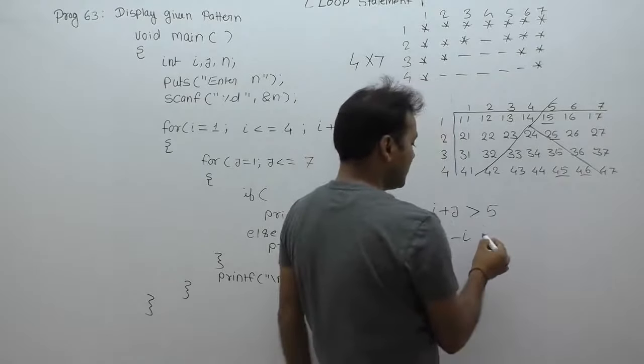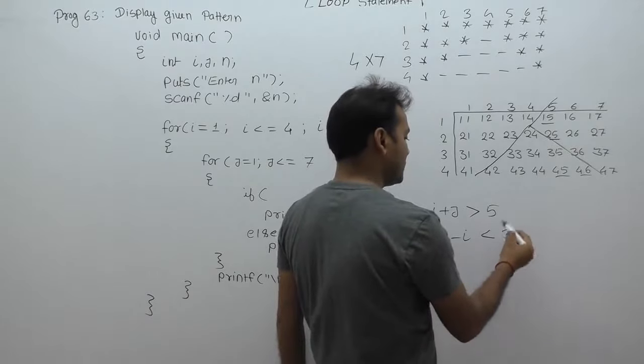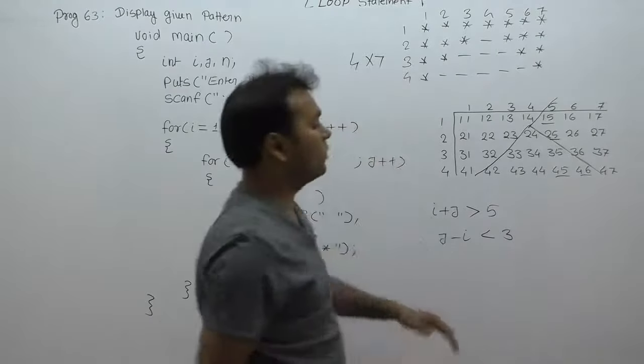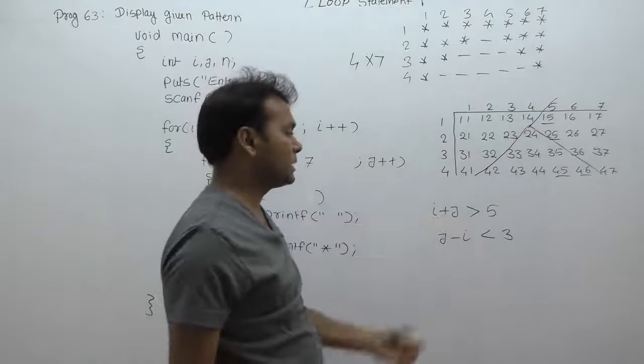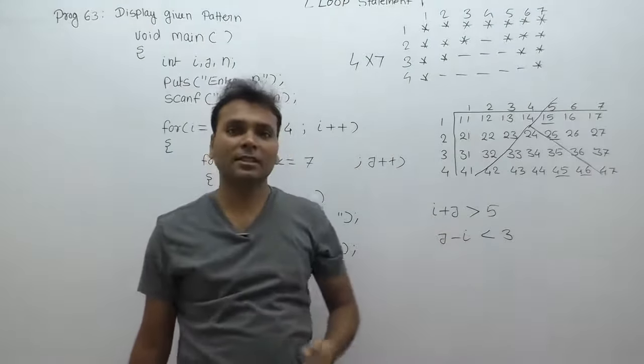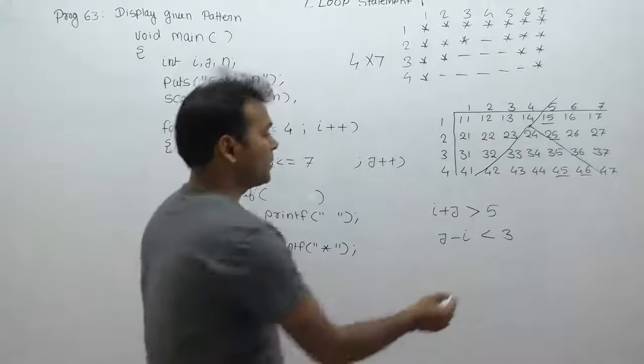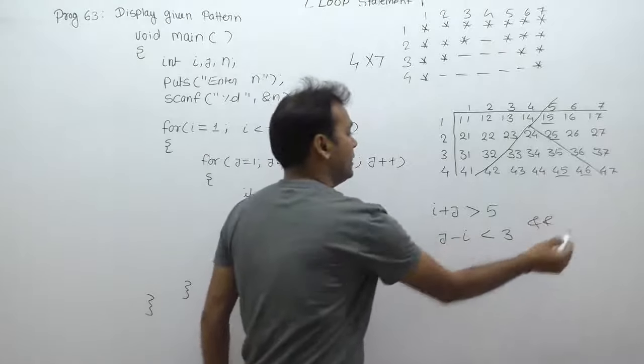j minus i should be less than 3. Two conditions satisfy with respect to space - first condition satisfies, second condition satisfies - using AND operators.